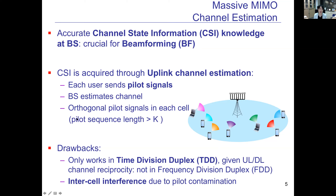There are two major drawbacks in Massive MIMO. The first is that it only works in general in time division duplexing, or TDD, exploiting uplink-downlink channel reciprocity. Therefore, in general, Massive MIMO will not be available for frequency division duplexing.